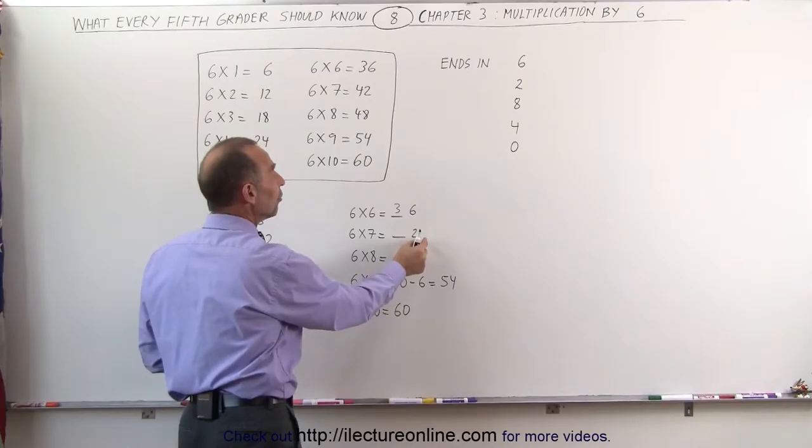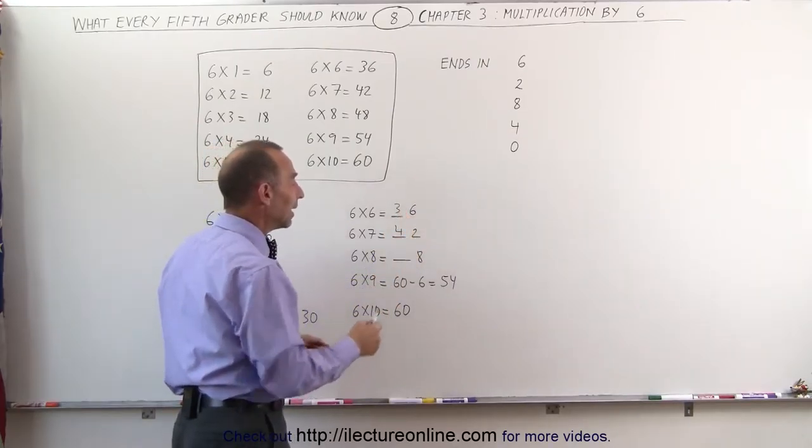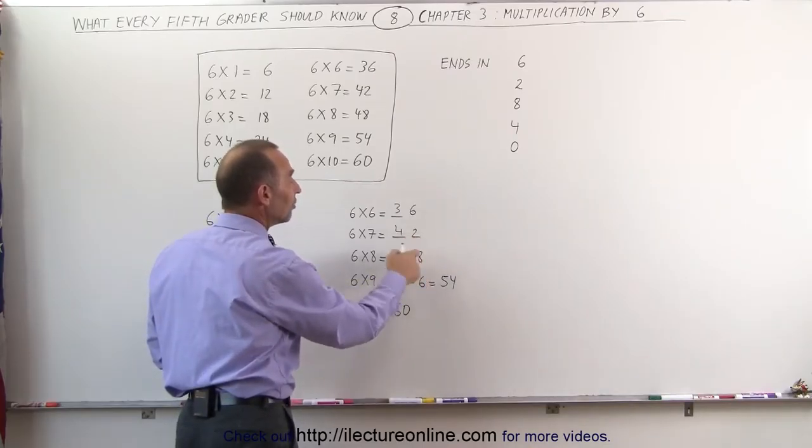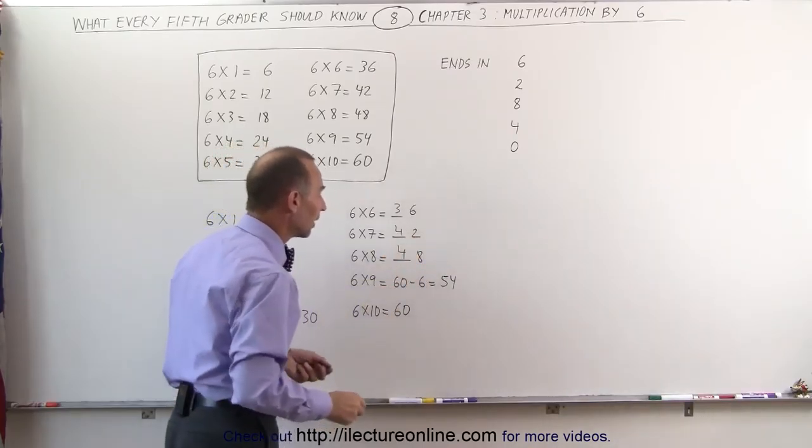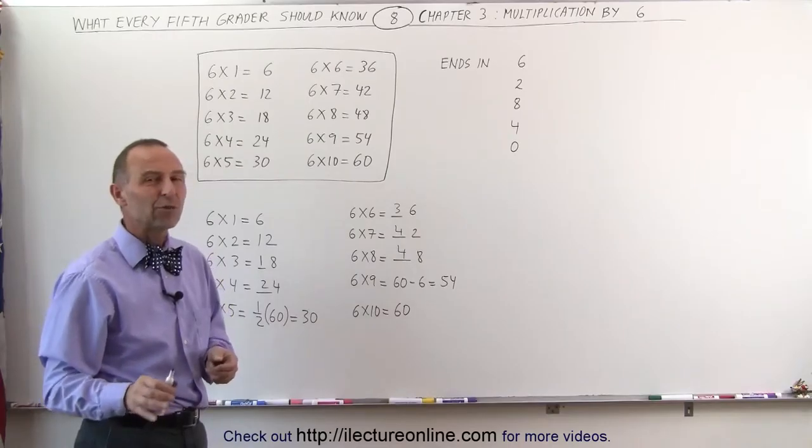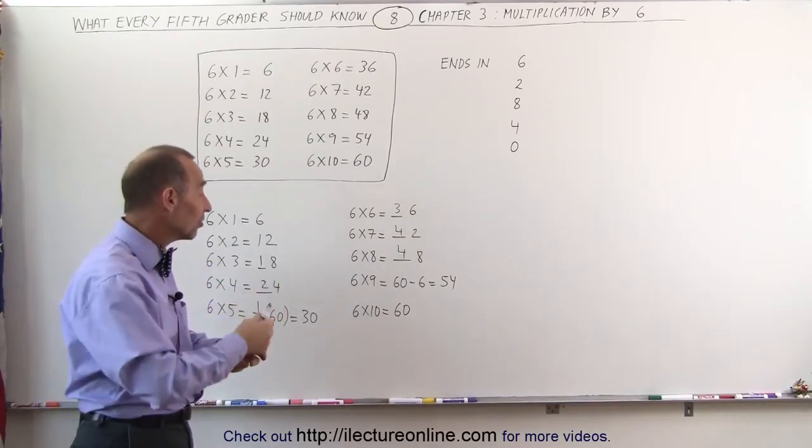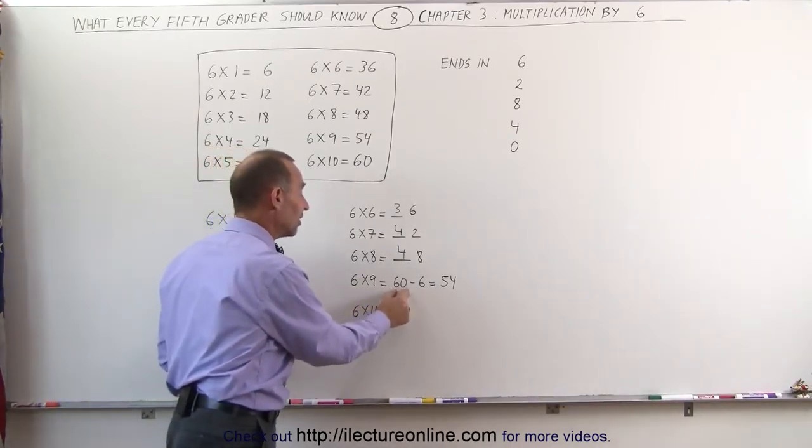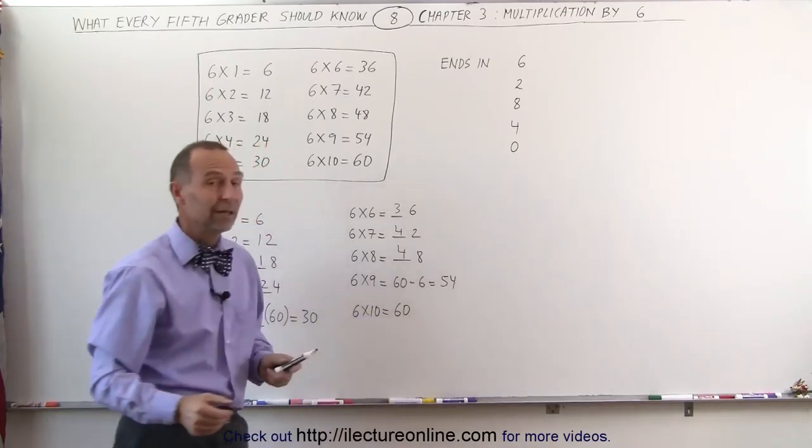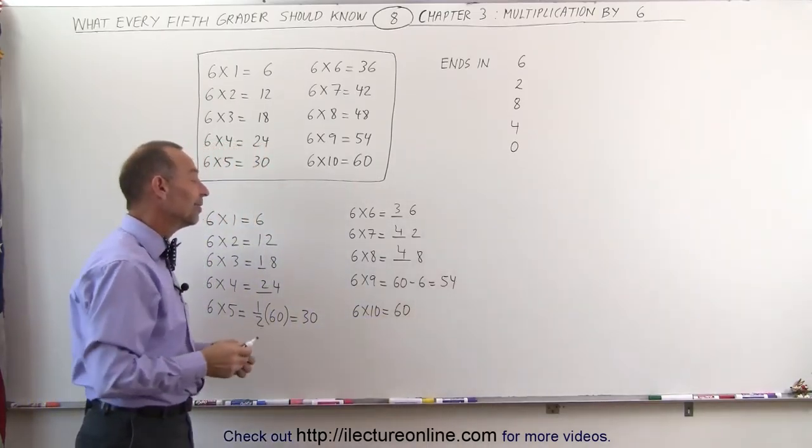The next one needs to end in a 2, and I know that by then you're in the 40s, so this becomes 42, and then you add another 6 to the 2, you get an 8, you're still in the 40s. 6 times 9, I always like to go 6 times 10 minus 6, so 6 times 10 is 60, minus 6 gives me 54, and 6 times 10 is equal to 60.